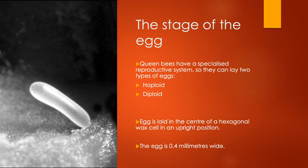The eggs that the queen bee lays are absolutely tiny — they are 0.4 millimetres wide, so you'll really struggle to see that on a ruler. These eggs are laid upright, in an upright position, in the centre of a hexagonal wax cell in the hive. If you look on the left, you will be able to see an egg cell there.